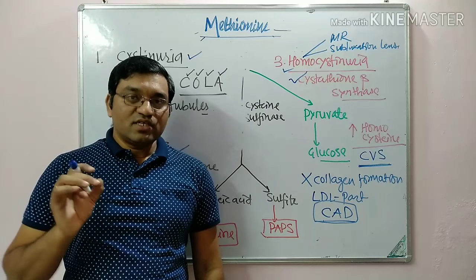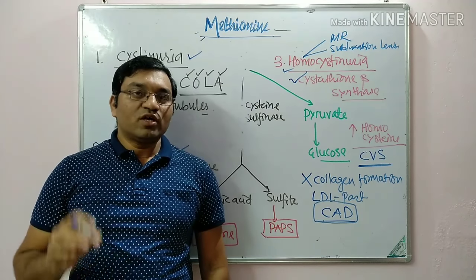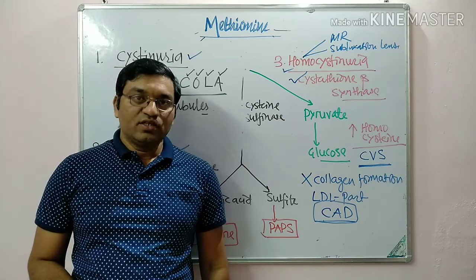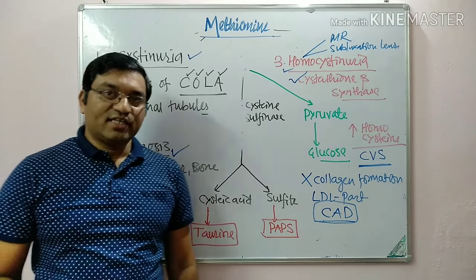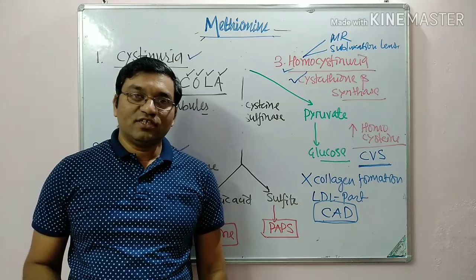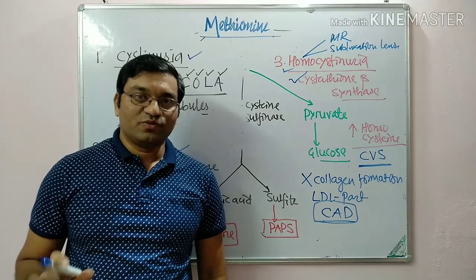So these are the three disorders — cystinuria, cystinosis, and homocystinuria — related to methionine metabolism. This is all about the metabolism of methionine, cysteine, and cystine. Thank you.